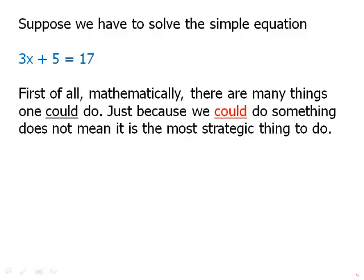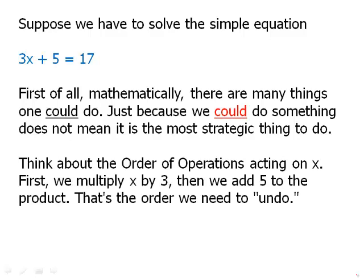Just because we could do something does not mean it is the most strategic thing to do. There are many more things that we could do than are strategic to do. It's very important to keep that in mind. So what would be strategic? Think about the order of operations acting on x. First, we multiply the x by 3, then we add 5 to the product. That's the order we need to undo.